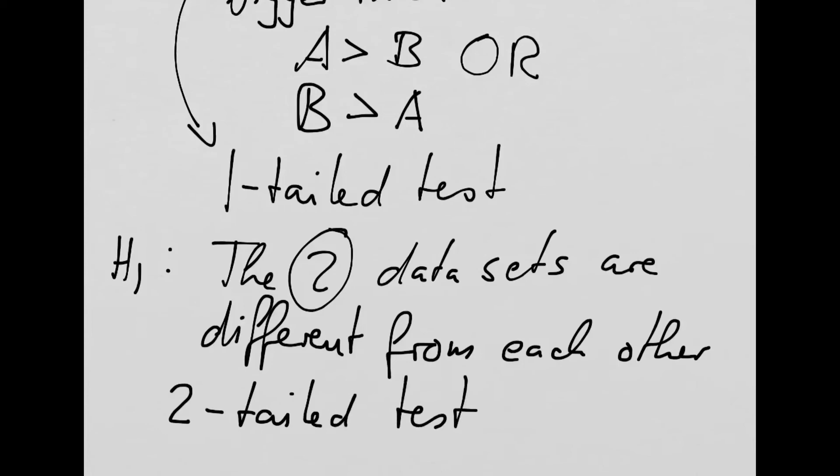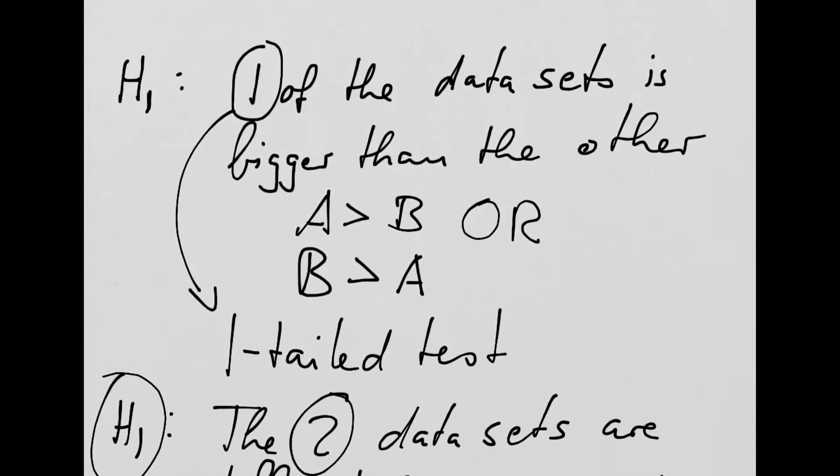So whether you should use a one-tailed or a two-tailed test, it really depends on your alternative hypothesis. The null hypothesis is always the same. It says there is no difference. The alternative hypothesis is if the two data sets are different. So we can write this as A different to B. If the two data sets are different from each other, then it's a two-tailed test. If we say one of the data sets is bigger than the other, then it is a one-tailed test. I hope this makes sense. And thank you for watching.